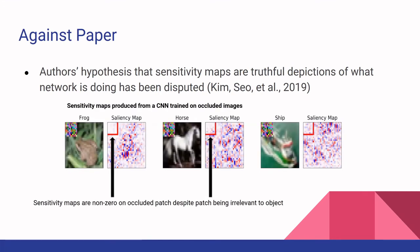Kindermans and colleagues in 2019 conducted an experiment where they took images from the CIFAR-10 dataset — a frog, a horse, and a ship — and replaced the upper left corner of every image with a 10-by-10 patch of uniform noise. They trained the neural network on these occluded images, ran classification, and looked at the sensitivity maps. The sensitivity maps highlighted pixels in those patches, but following SmoothGrad's claim, these patches are supposedly relevant for predicting the object — yet they are completely irrelevant to the object.